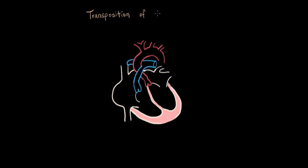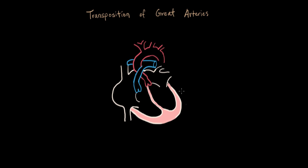Transposition of the great arteries. The two great arteries that come out of the heart are the pulmonary artery, which leads to the lungs, and the aorta, which leads to all the arteries in the body. So literally, transposition of the great arteries means the aorta being where the pulmonary artery is supposed to be, and the pulmonary artery being where the aorta is.